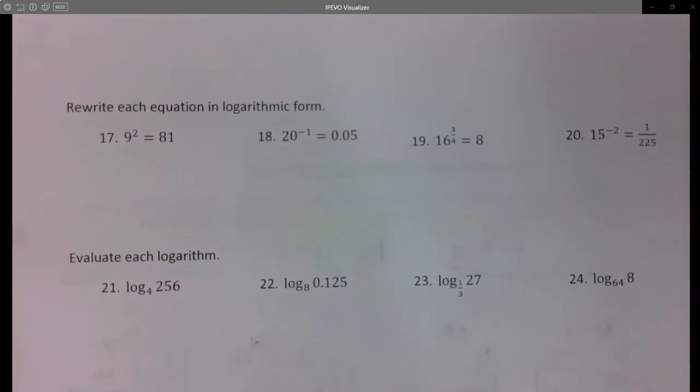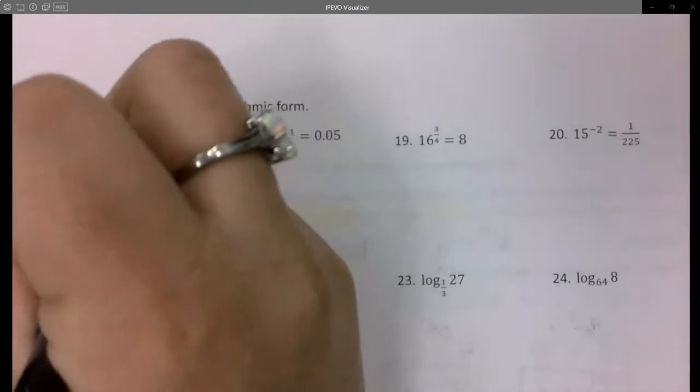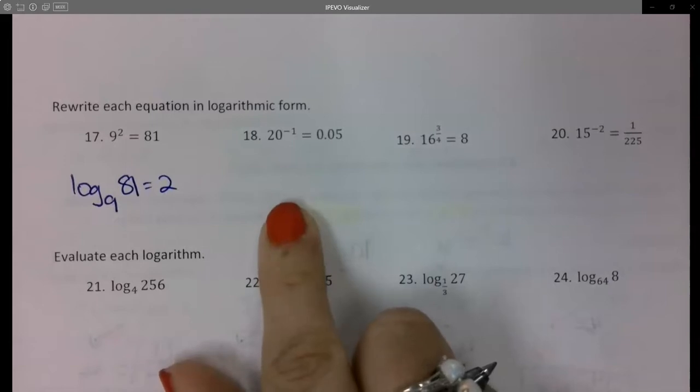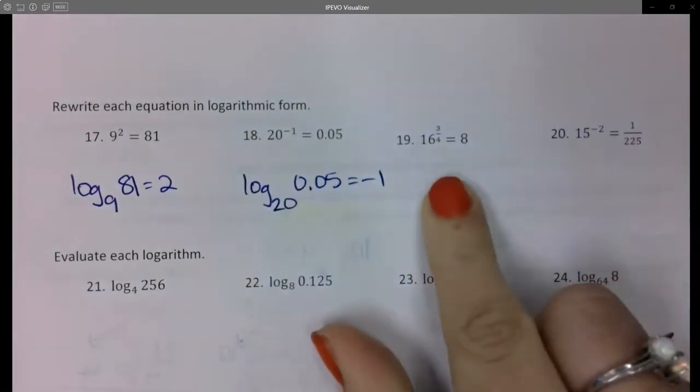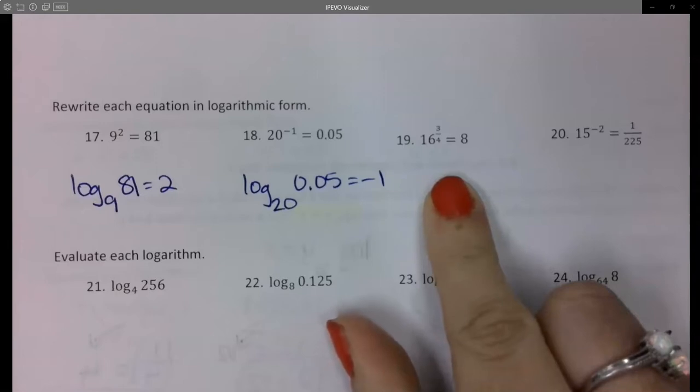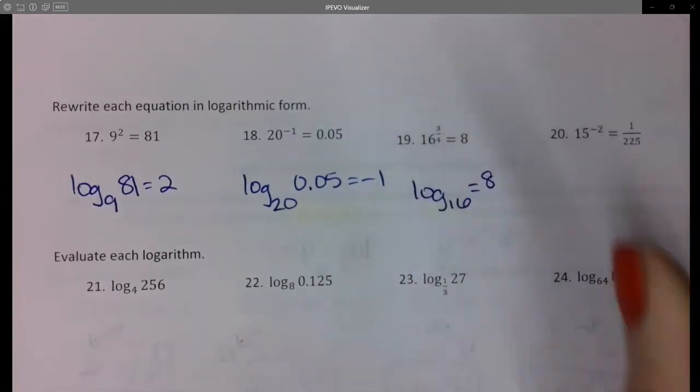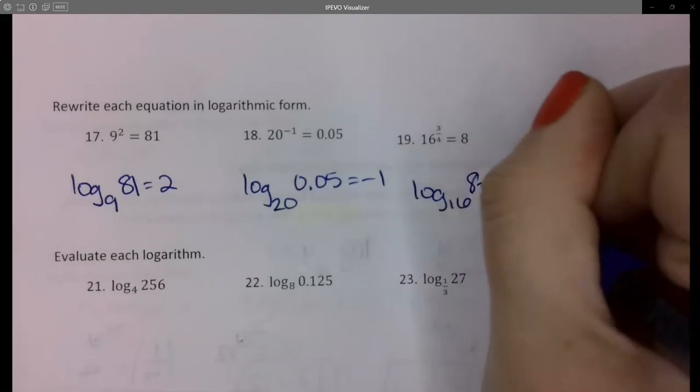So then, how would I write number 17? Number 18? Question on the first side. Question on the second side. So, number 19? And then number 20.